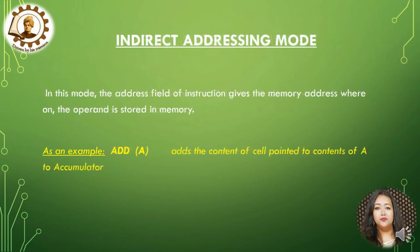In indirect addressing mode, the address field of the instruction gives the memory address where the operand is stored in memory, such as ADD A, which means add the content of the cell pointed to by the contents of A to the accumulator.